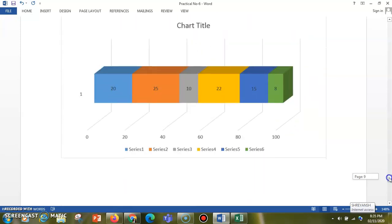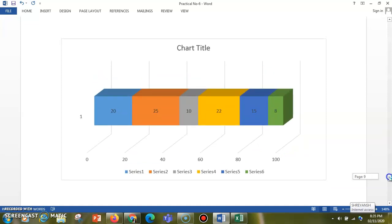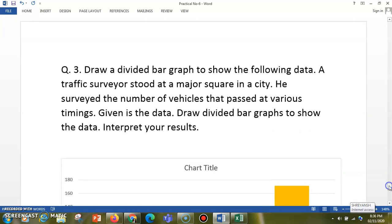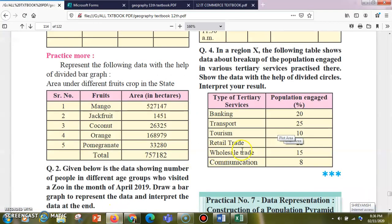Now let us see the third question. Draw a divided bar graph to show the following data. A traffic surveyor stood at a major square of inner city and he surveyed the number of vehicles that passed at various timings. Given is the data, and draw a divided bar graph to show the data and interpret your result.